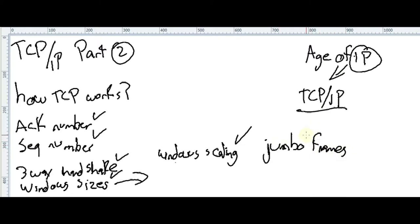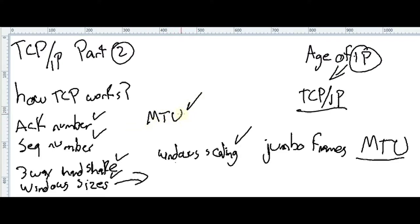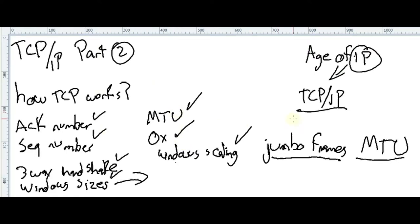Window scaling is important especially when using jumbo frames, where the MTU can be different. We won't explicitly cover MTU here, but you need to understand it — I highly recommend checking my 'MTU in a Nutshell' video and my 'Jumbo Frames in a Nutshell' video. Also, ultra-basic stuff like hexadecimal, bits, and bytes are part of this, so make sure you're familiar with those.